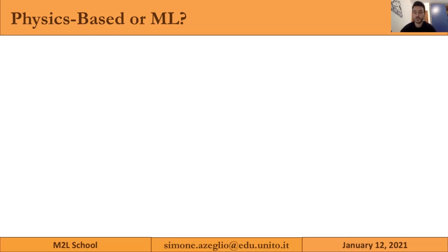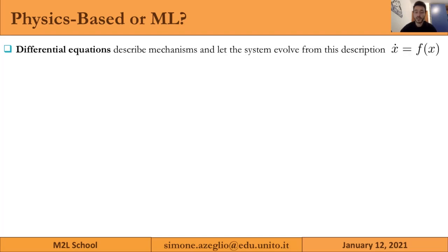The major advances in machine learning in recent years were due to encoding more structure into models, where more structure basically means faster and better fits from less data. In science, the structure we are dealing with is that heterogeneous scientific data is encoded in the structure of scientific models — differential equations which describe a mechanism and let the equations naturally evolve from this description.